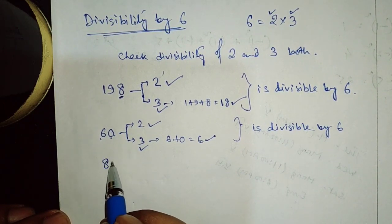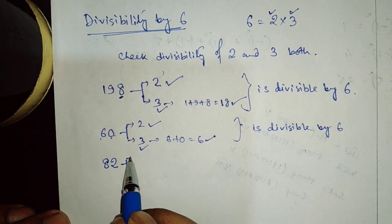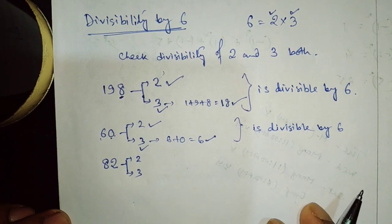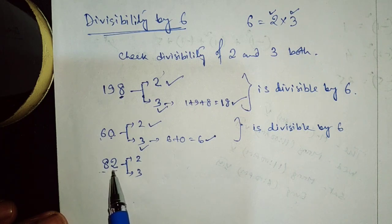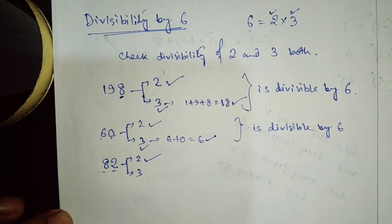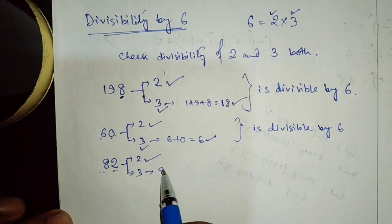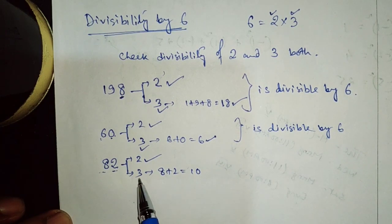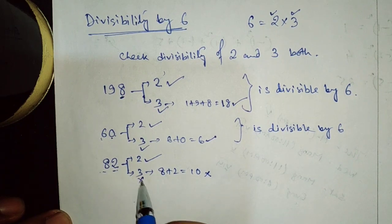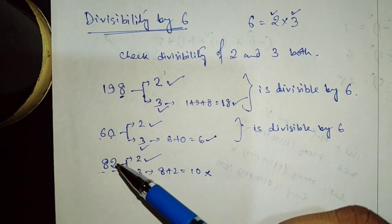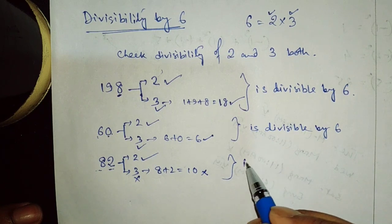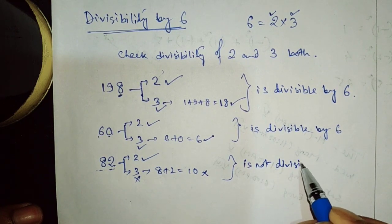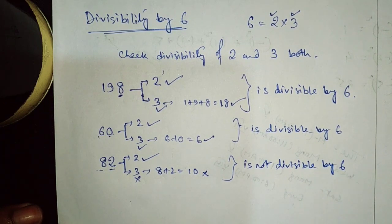Let's take another example: 82. We have to check for both 2 and 3. We know that 82 is divisible by 2 because the last digit is 2. To check for 3: 8 plus 2 is 10, but 10 does not come in the table of 3, so it is not divisible by 3. Since 82 is divisible by 2 but not by 3, 82 is not divisible by 6.